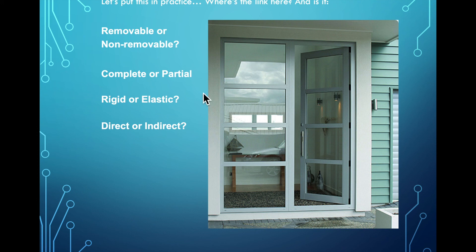Are the hinges rigid or elastic? Well, they're made of metal. So obviously they would be rigid. And is this direct or indirect? Is the link direct or indirect? So is the door touching the wall directly or is there something holding them together? Well, the hinges are holding them together. So that makes it an indirect link.